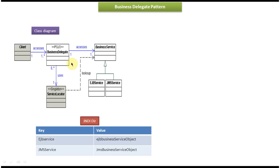Next, the Business Delegate Class. This is the intermediate layer between the Presentation Layer and the Business Service Layer. This Business Delegate Class provides access to the Business Service methods. What this Business Delegate will do is it will use the Service Locator to look up the Business Service Object. Basically, this Service Locator contains a lookup method which uses JNDI lookup to get the Business Service Object from the JNDI Directory. So once the Service Locator gets the Business Service Object, it will give the Business Service Object to the Business Delegate Object, so that the Business Delegate Object can invoke the Business Service methods.